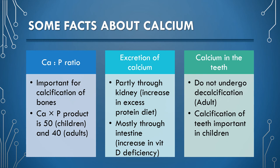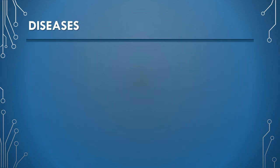However, proper calcification of teeth is important in growing children. Plasma concentration of calcium is maintained by homeostatic control, mostly by parathyroid hormone. Hence, abnormalities in calcium metabolism are mainly associated with alterations in hormones.